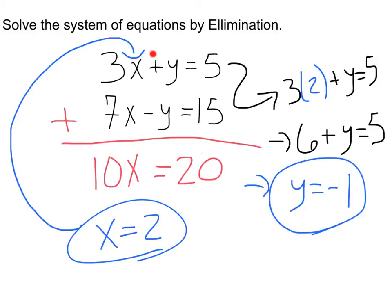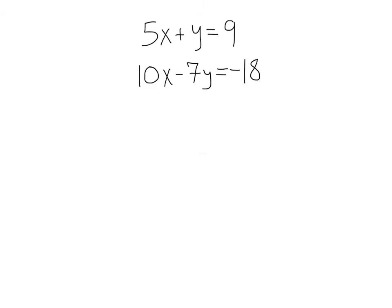Remember, when plugging this in, you can go into either equation. And this system has a solution of x equals 2 and y equals negative 1. Here we go. We've got 5x plus y equals 9 and 10x minus 7y equals negative 18. Let's go ahead and add these guys together. We've got 5x plus 10x. That's going to be 15x. We've got y minus 7y and...